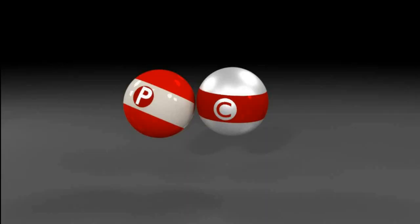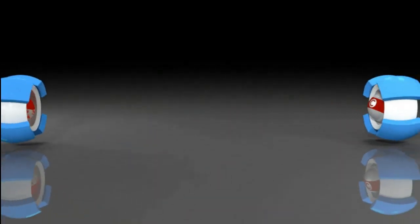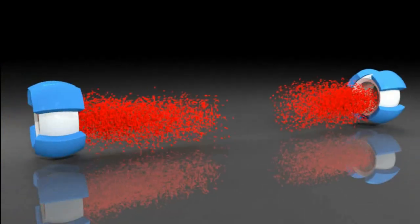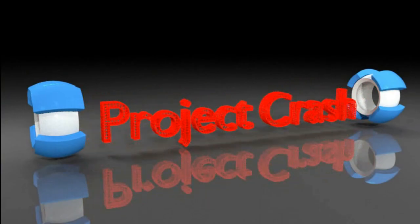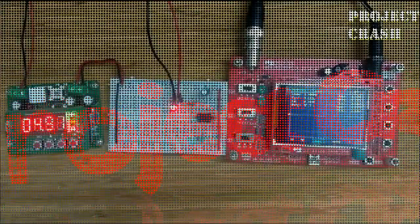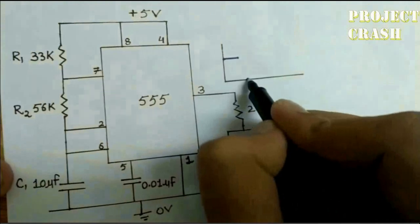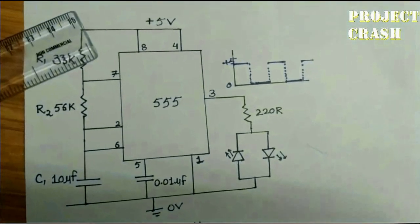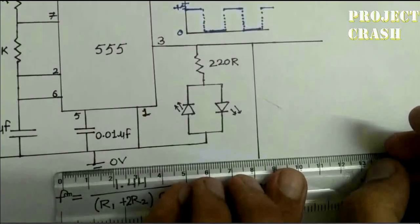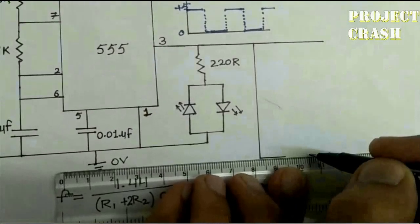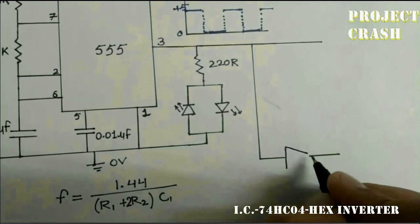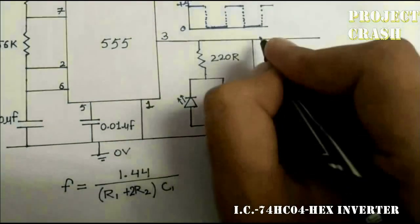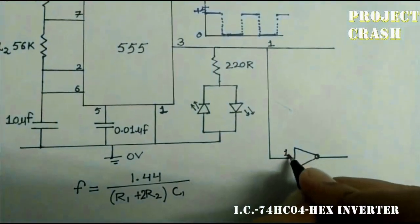The output of 555 timer circuit is a square wave with two levels: positive and zero. That means there is no negative level. But if I add an inverter to the output of 555, then this may generate positive as well as negative peaks.